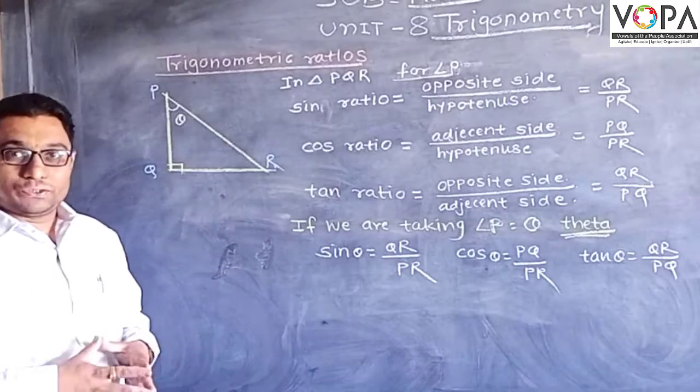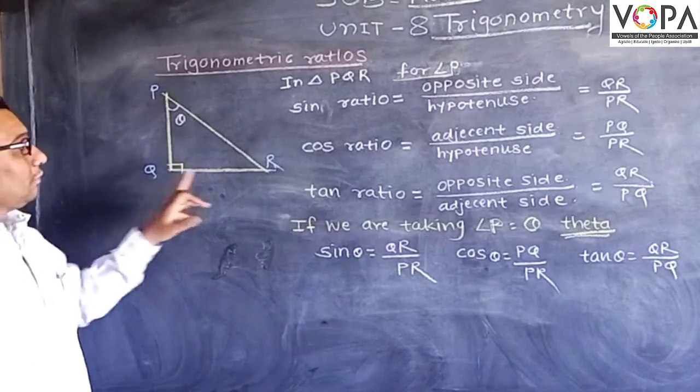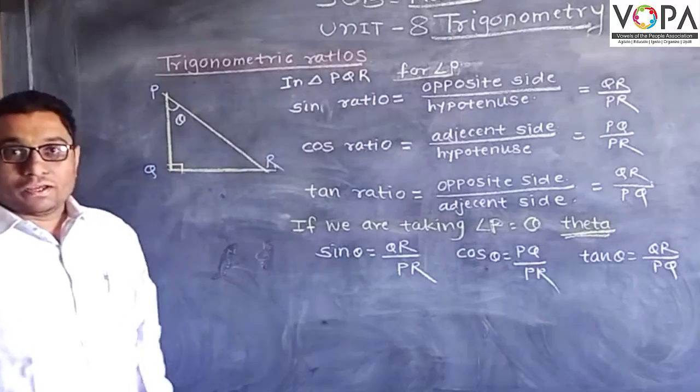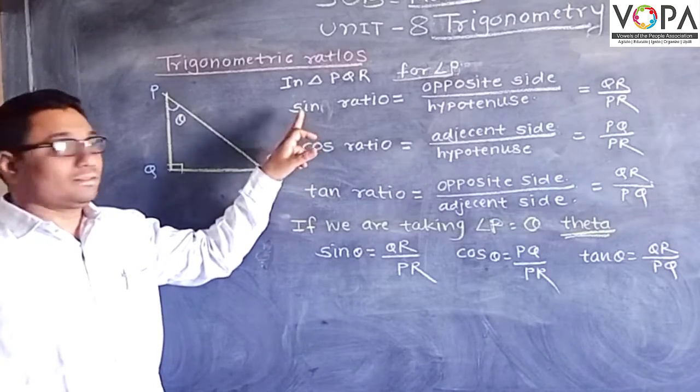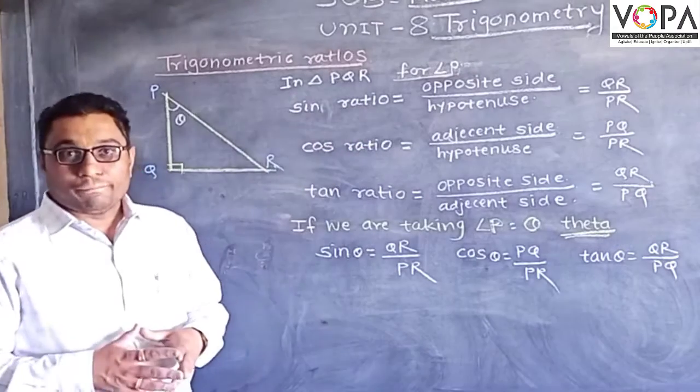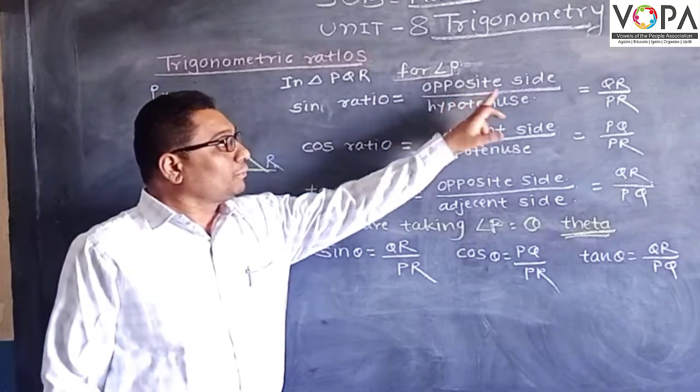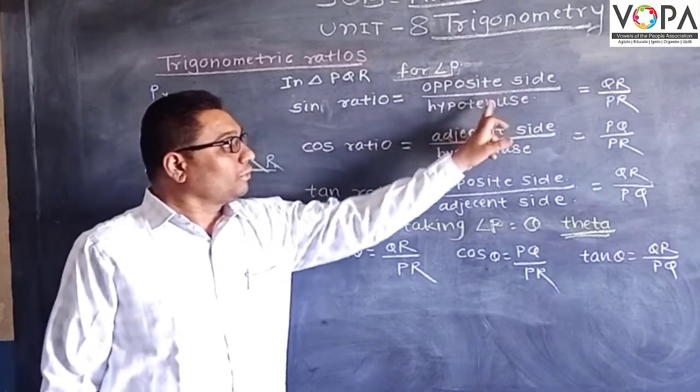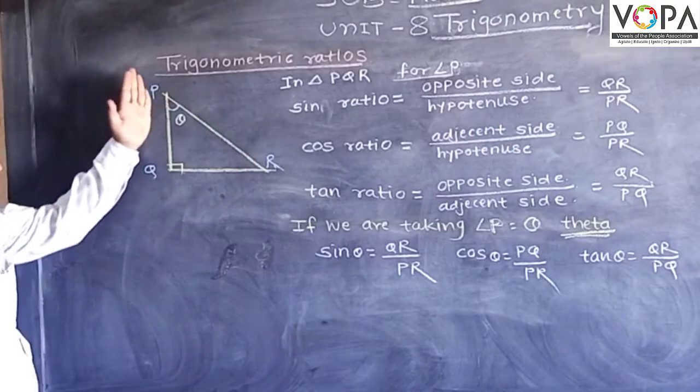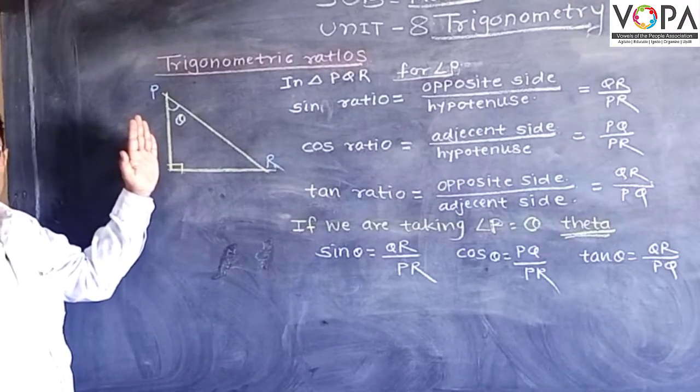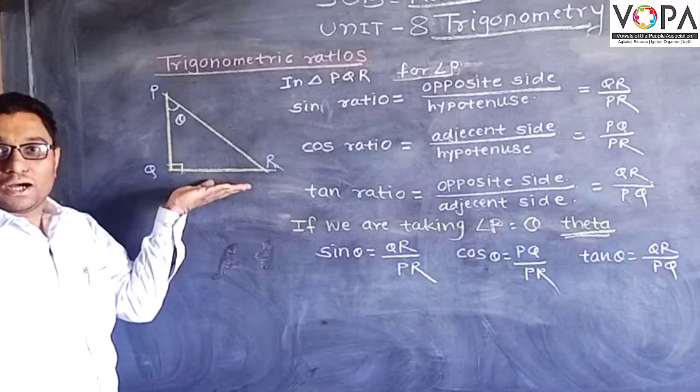What are the trigonometric ratios? Here we have angle PQR. For angle P, the first trigonometric ratio is called the sine ratio. What is the sine ratio? The sine ratio is opposite side over hypotenuse. For angle P, side PQ is the adjacent side and QR is the opposite side.